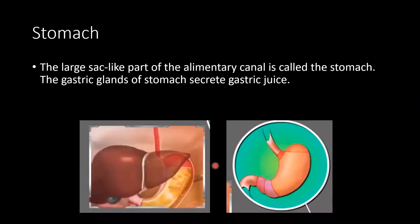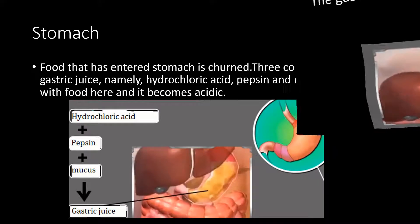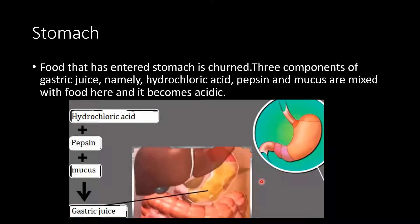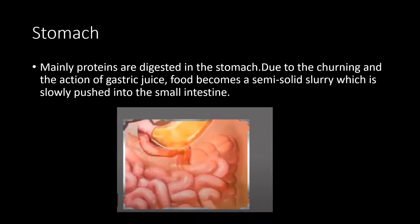Now let us understand about the stomach. The large sac-like part of the alimentary canal is called the stomach. The gastric glands of the stomach secrete gastric juice. Food that enters the stomach is churned. Three components of gastric juice — hydrochloric acid, pepsin, and mucus — are mixed with the food, making it acidic. Mainly proteins are digested in the stomach. Food becomes a semi-solid slurry which is slowly pushed into the small intestine.